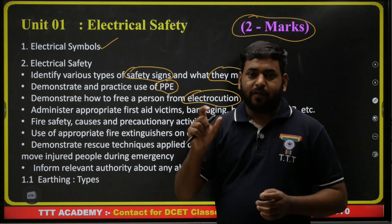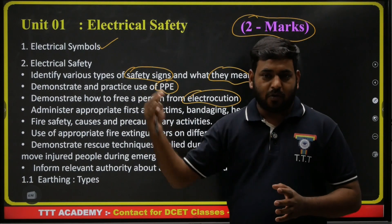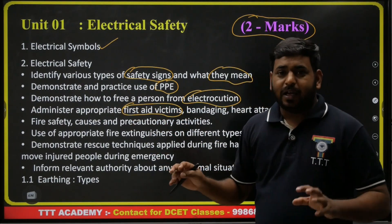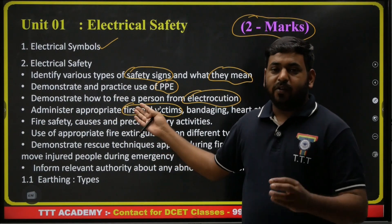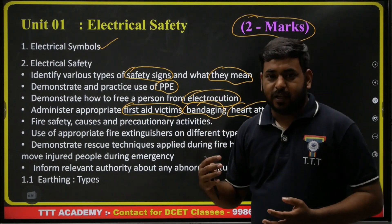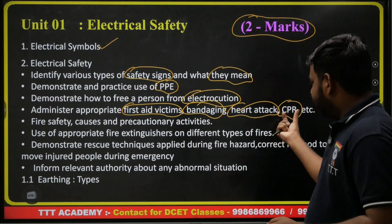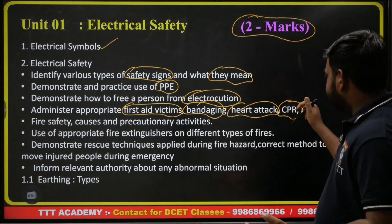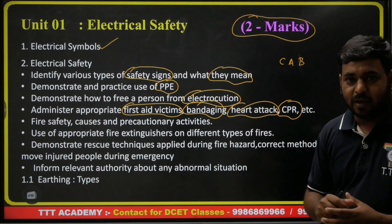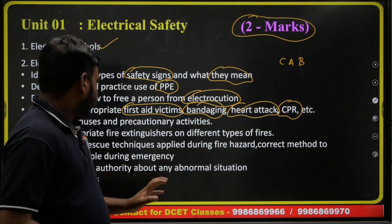Electrocution means a person affected by electric shock. Topics include administering appropriate first aid to victims — injured persons in case of accident — including first aid techniques, bandaging, and heart attack precautions. CPR — Cardio Pulmonary Resuscitation — is a life-saving first aid method. The CAB principal is used: C for Compressions, A for Airways, B for Breathing. One cycle requires 30 chest compressions and two rescue breaths.